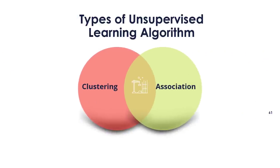Types of unsupervised learning algorithms: the unsupervised learning algorithm can be broken down into two different types of problems. Clustering: a way to put things into groups so that things that are most alike stay in the same group and things that are most different stay in different groups. Cluster analysis finds what all data objects have in common and puts them into groups accordingly. Association: an association rule is a way to learn without being told what to do — it is used to find connections between variables in a large database, finding the group of items in the dataset that are always found together. For example, people who buy X (say, bread) also tend to buy Y (butter or jam) — the market basket analysis is a good example of an association rule.